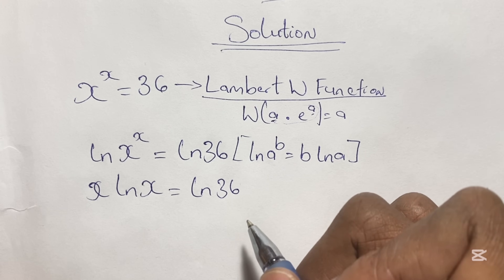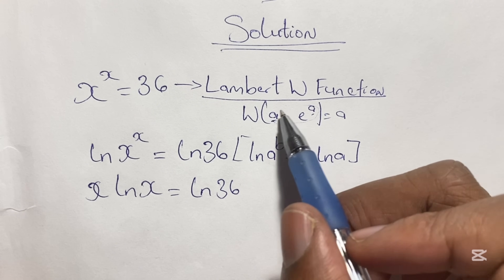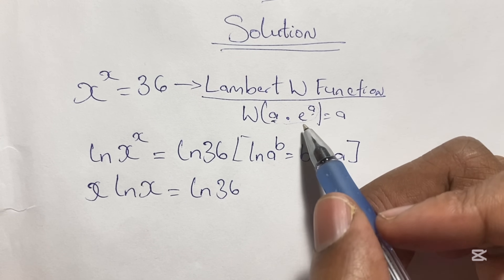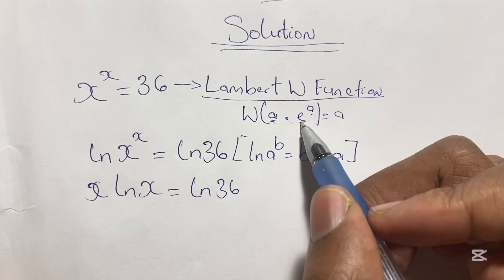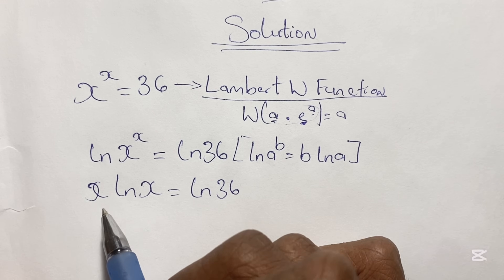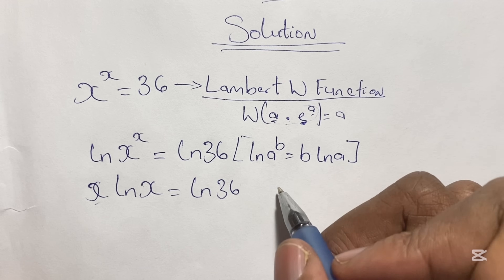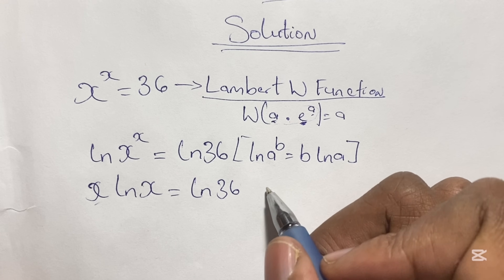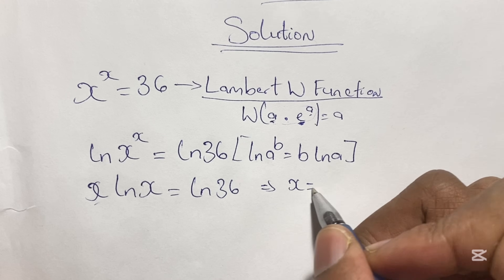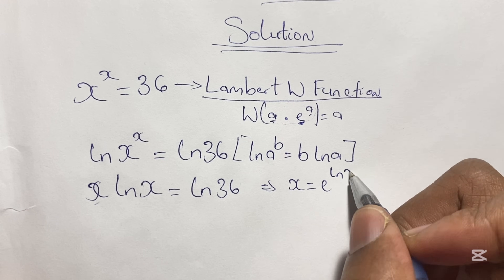As we continue to write our equation in the form a times e to the power of a, we need to have the value e present. So we write x in terms of e by saying x is equal to e to the power of ln x.